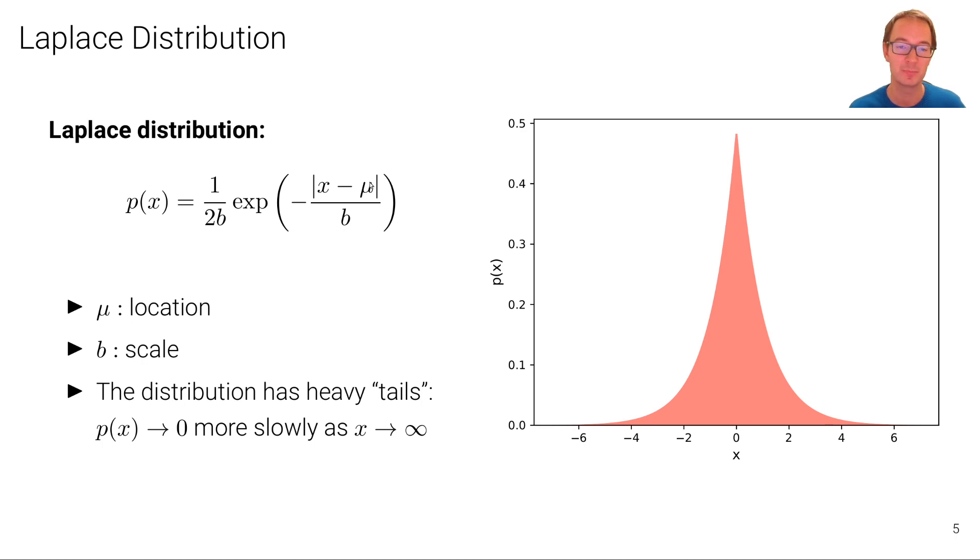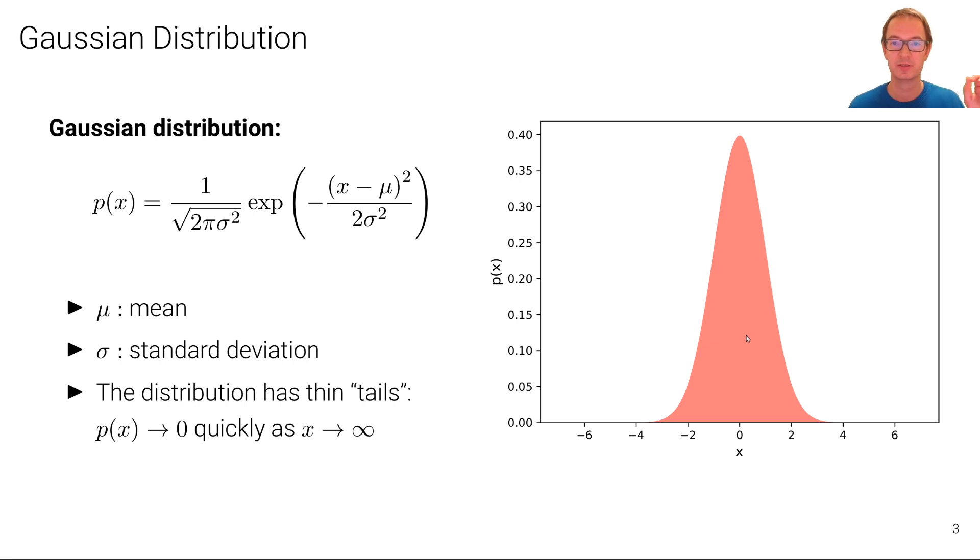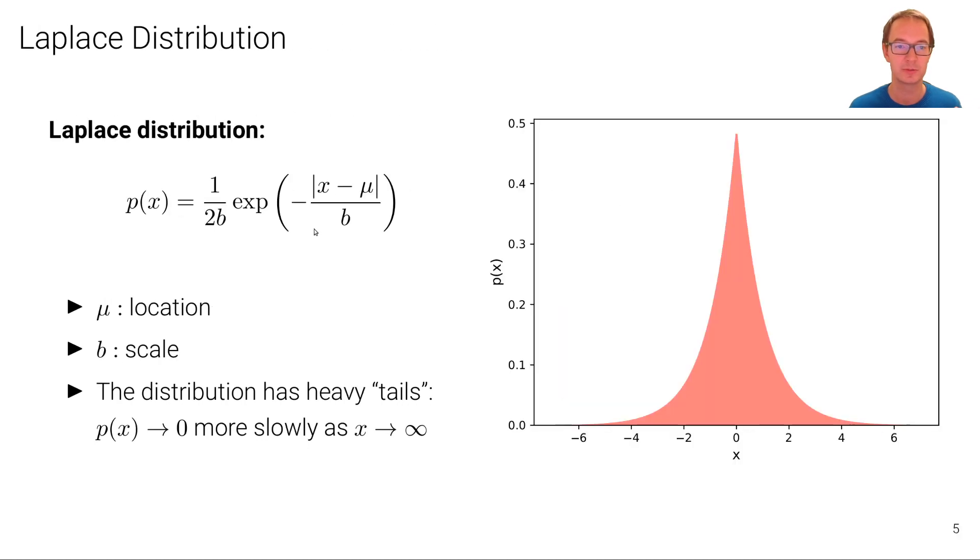But it's also described by two parameters in the one-dimensional case, mu and the scale b. So similar to the Gaussian distribution where the standard deviation determines the spread and mu determines the center, here we have also mu determining the location, which is the center, and b is the scale, also the spread of that distribution, if it's narrow or wide.